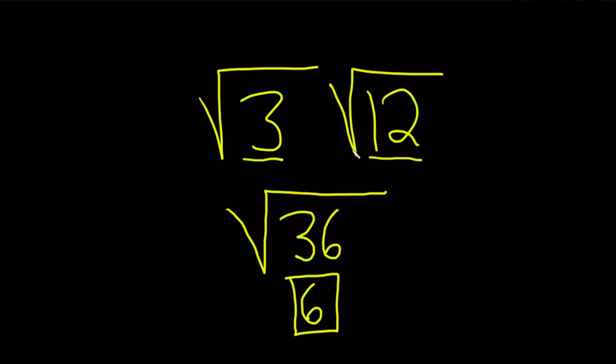It could be harder if the numbers were bigger, but they are not. So in this case, we can just multiply across and we get 36. And then when we take the square root of 36, we get 6. So worked out pretty nice.